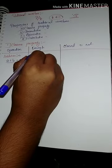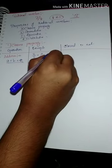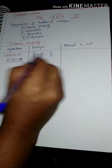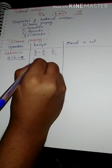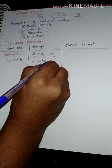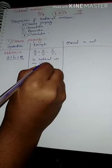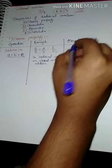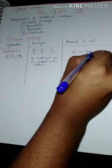Let us take a simple example: 2/5 plus 4/5 equals 6/5. Here, 2/5 is a, 4/5 is b, and 6/5 is c. If we add any two rational numbers, we get a rational number. Therefore, rational numbers are closed under addition.